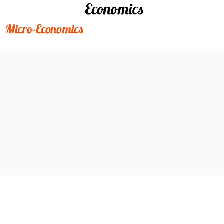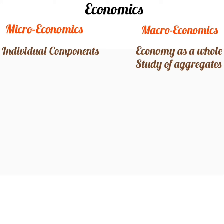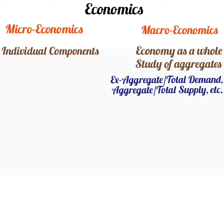There are two branches of economics: microeconomics and macroeconomics. Microeconomics is a study of individual components of the whole economy, whereas macroeconomics is the study of the economy as a whole. Macroeconomics deals with the study of aggregates like aggregate or total demand and aggregate or total supply.